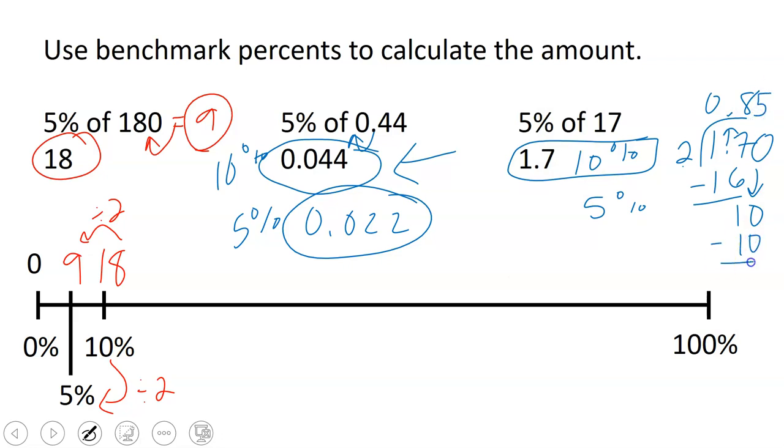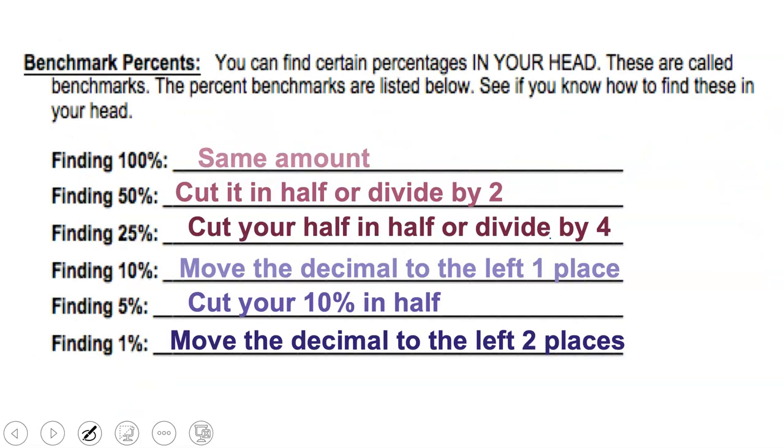5 times 2 is 10. And now I have 0 as a remainder. So half of 1.7 is 0.85, which we could formally say as 85 hundredths. So again, when you have 10%, you just cut it in half, cut the 10% in half to find the 5%.